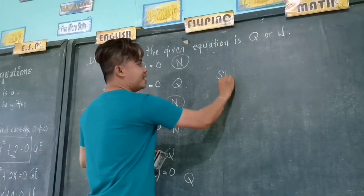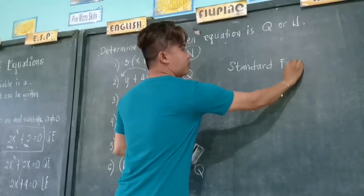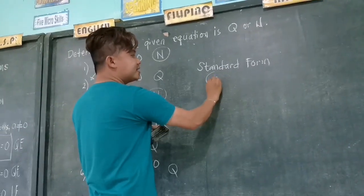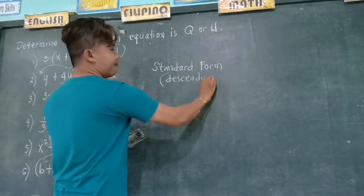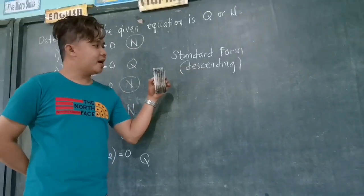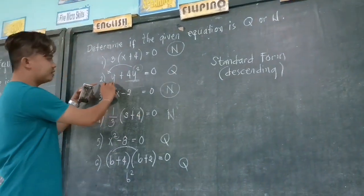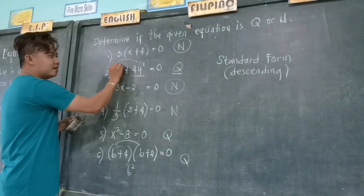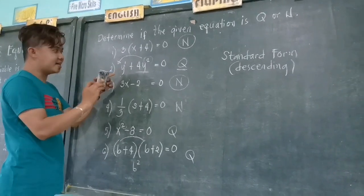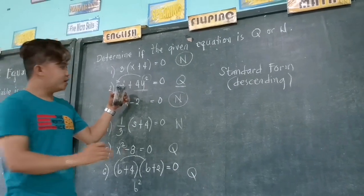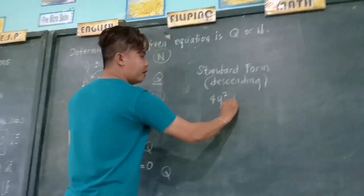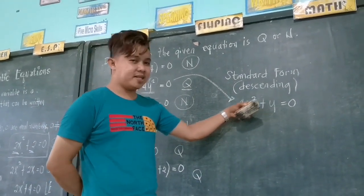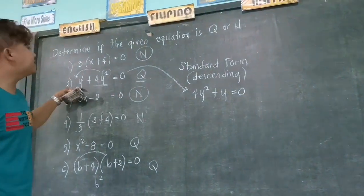When we say standard form, the degree is descending — meaning from the highest to the lowest. In number 2, this is a quadratic equation but not in standard form, because the degree is ascending from 1 to 2. We can write it as 4y squared plus y equals 0. This is the standard form of that quadratic equation.